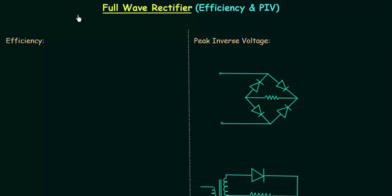Let's see how efficient the full wave rectifier is. Efficiency of a full wave rectifier is equal to the ratio of output DC power across the load to the input AC power. Efficiency is generally represented in terms of percentage.